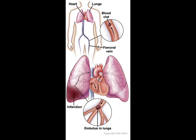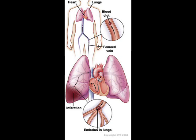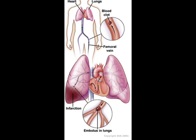An embolus, spelled E-M-B-O-L-U-S, is usually a blood clot — a thrombus — but may also be fat, amniotic fluid, bone marrow, a tumor fragment, or an air bubble that travels through the bloodstream until it blocks a blood vessel. Pulmonary embolism is the sudden blocking of an artery of the lung, mainly the pulmonary artery, by an embolus.